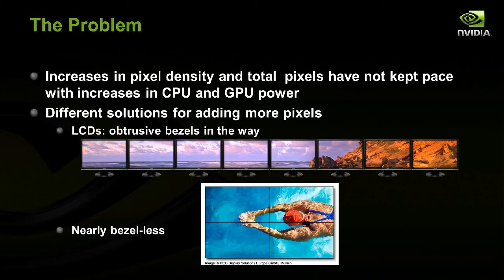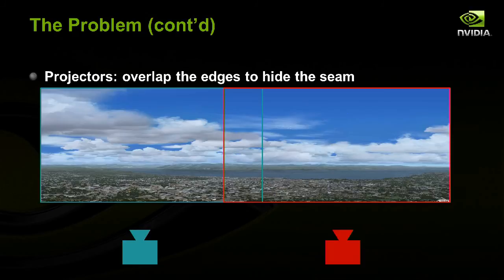You can make corrections to account for the bezel, but it's still an annoying experience. If you're willing to spend more money, you can get a bezel-less display, but it's still not a zero-seam experience. The best way to solve the problem if you really want a seamless display is to take projectors and overlap them, hiding the seam in the overlap region.